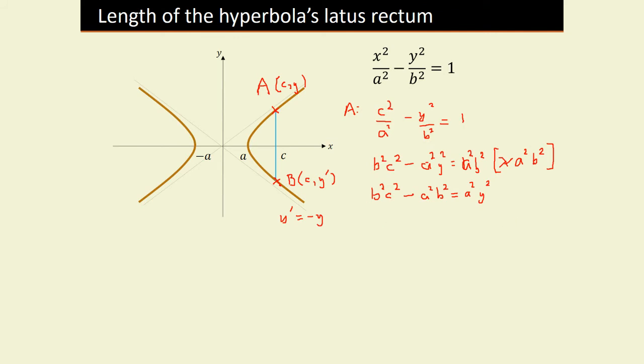On the right side, we can factor out B²: B²(C² - A²). For a hyperbola, we have the relationship B² = C² - A². So this bracket equals B². Therefore B² times B² equals B⁴ = A²y². Taking the square root gives B² = Ay.